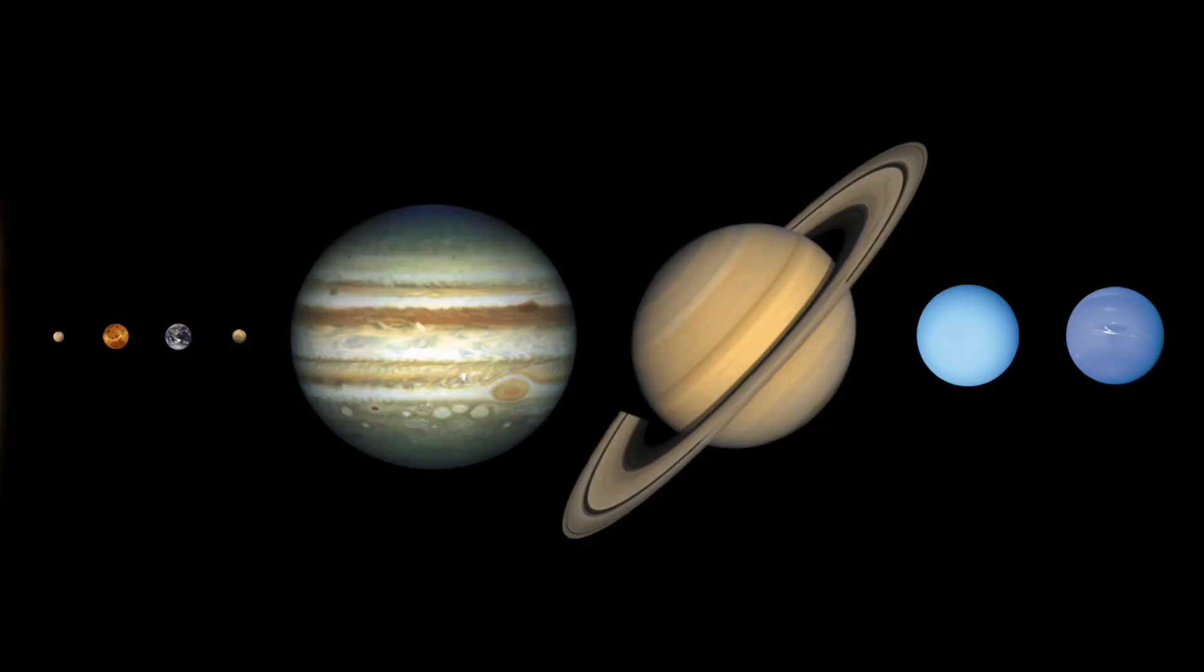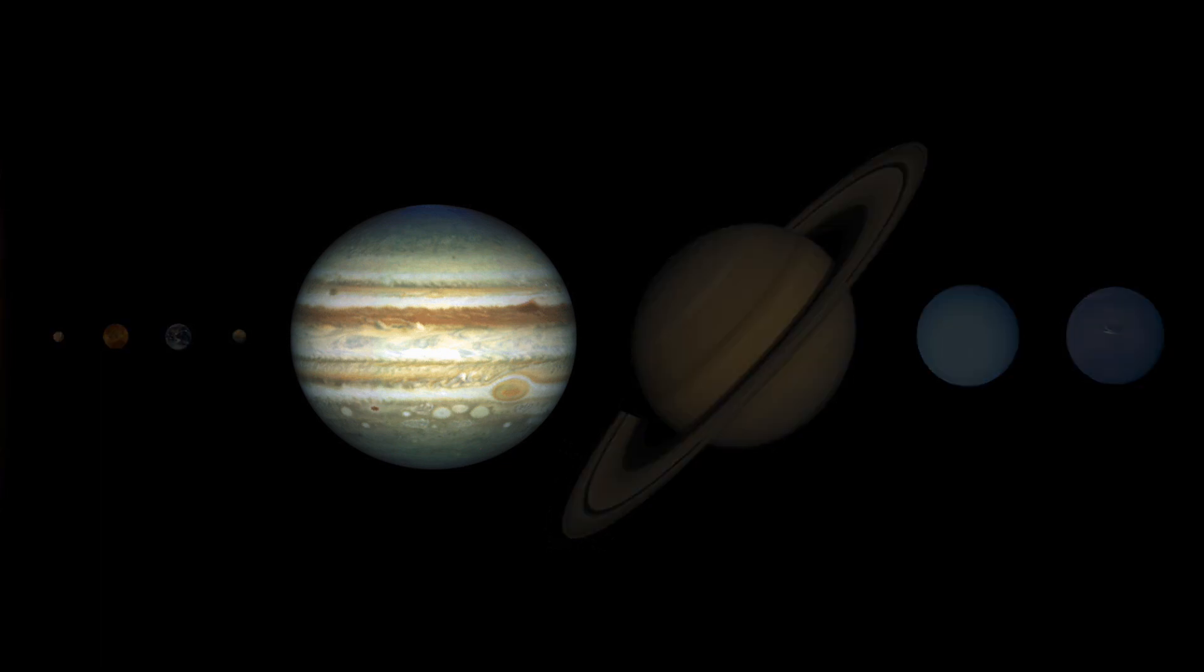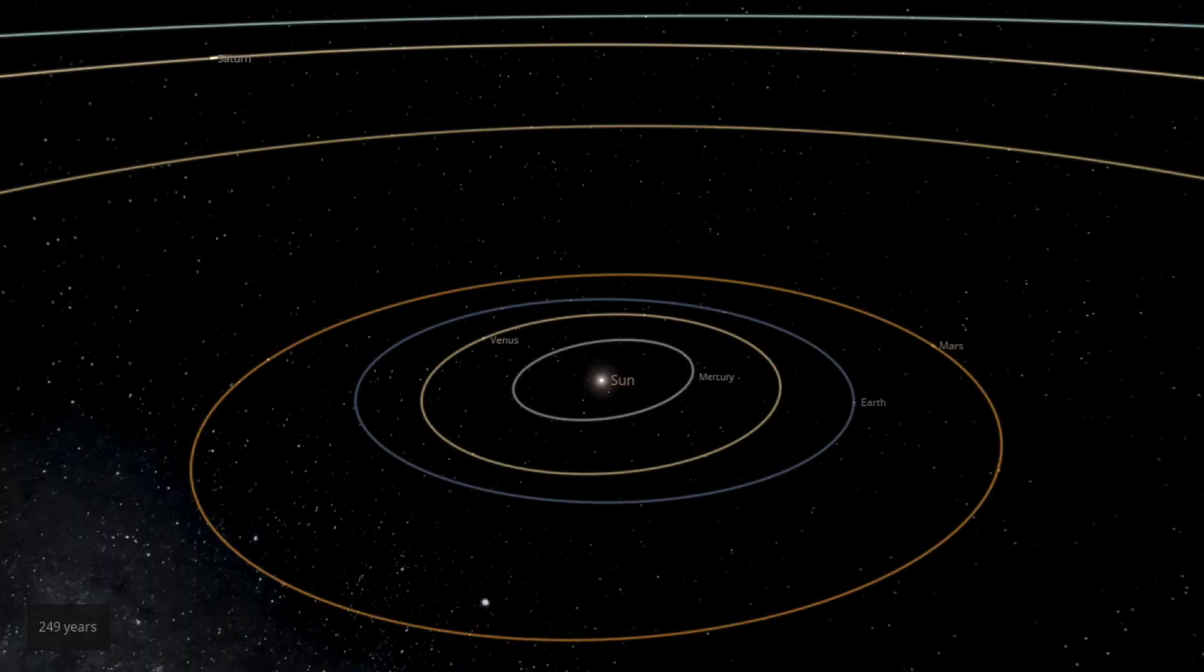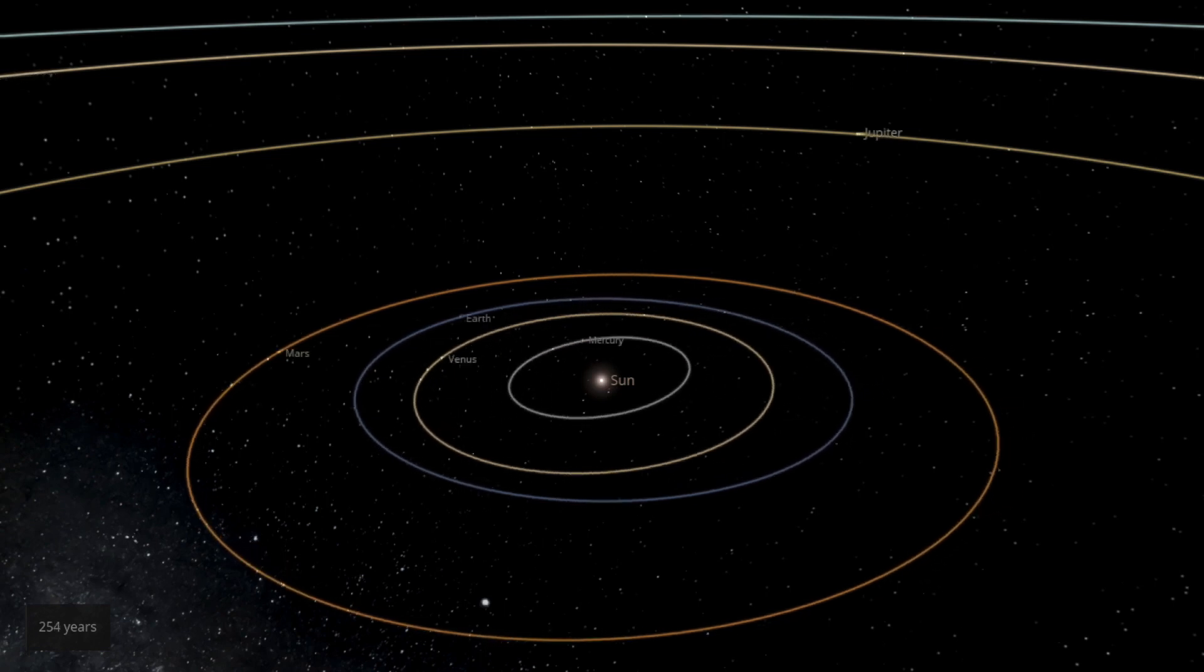And then there's the other planets. They all gravitationally influence each other a tiny amount, Jupiter particularly. So, in 1989, astronomer Jacques Laskar simulated the solar system over the next billion years, factoring in all of these small effects, and found that over those timescales, the solar system is in fact chaotic.